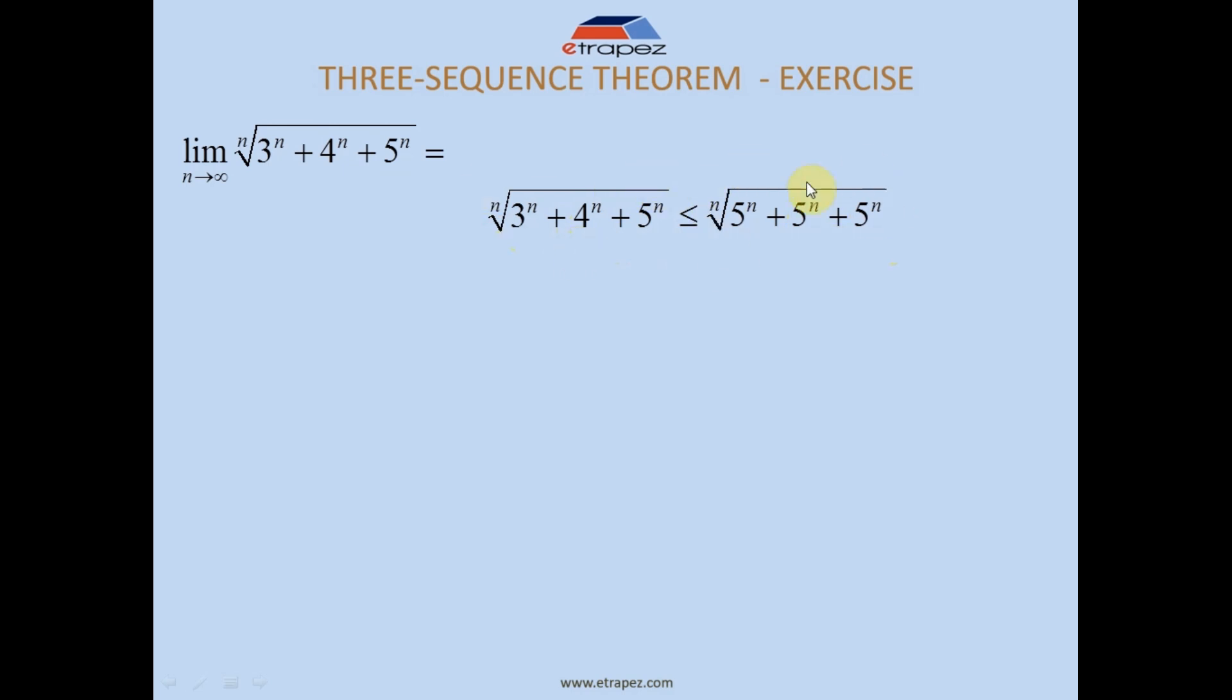So it's a true inequality that this is always greater than or equal to that. And from below, what do you think we limit it with? Not the smallest, but something like this: you still choose the largest, which is 5^n, and you write it only once. No matter how many constants there are, you only write it once - the nth root of 5^n.